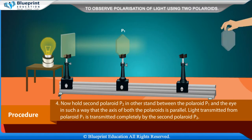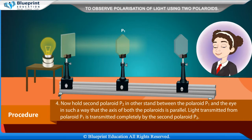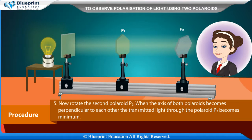Now hold second Polaroid P2 in another stand between the Polaroid P1 and the eye, in such a way that the axis of both the Polaroids is parallel. Light transmitted from Polaroid P1 is transmitted completely by the second Polaroid P2. Now rotate the second Polaroid P2. When the axis of both Polaroids becomes perpendicular to each other, the transmitted light through Polaroid P2 becomes minimum.